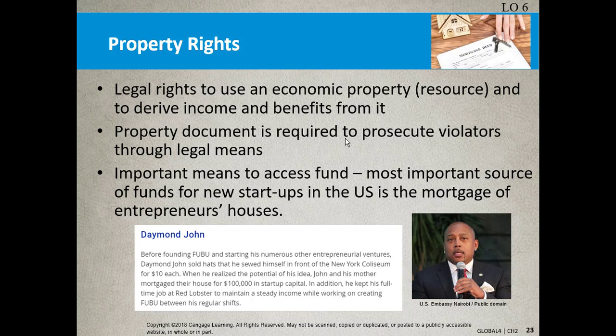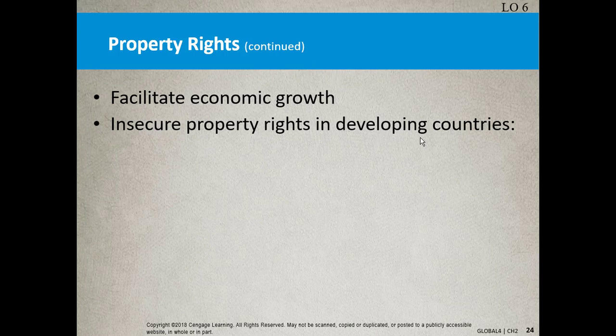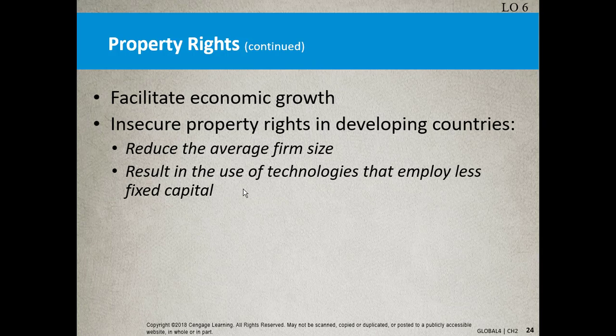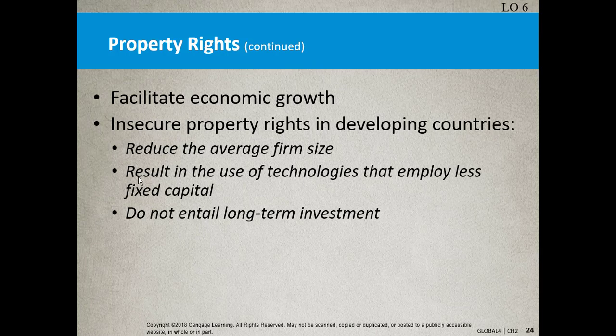Insecure property rights in developing countries reduce the average firm size and result in use of technologies that employ less fixed capital and don't entail long-term investment. If the average house is worth $500K and you're 20 years into it with $300,000 of equity, you have access to $300,000. In a developing economy without property rights, coming up with $150,000 isn't easy. The most expensive purchase in one's lifetime is usually a home.